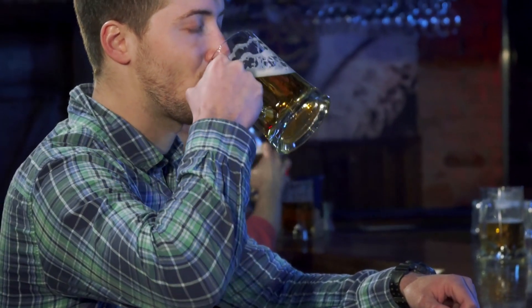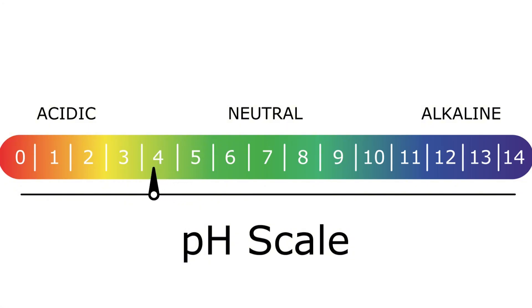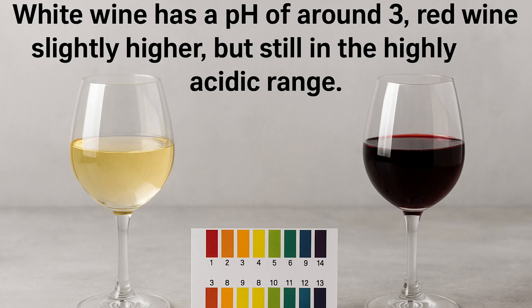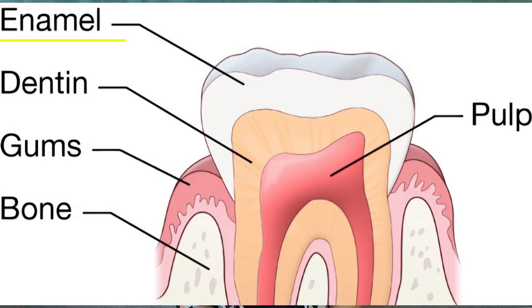Most people have no idea how acidic alcoholic drinks actually are. The pH of many alcoholic beverages is even lower than soda. White wine has a pH of around 3, and red wine is slightly higher but still in the highly acidic range. Enamel begins to dissolve at a pH below 5.5, which means when you drink alcohol, it takes about 10 minutes for the acid to start softening your enamel. And if there's not enough saliva, that acid sticks to your teeth even longer.